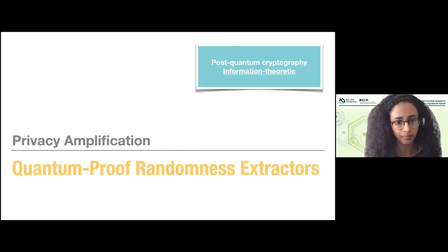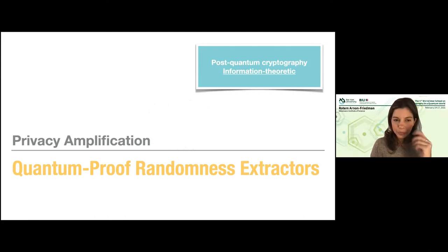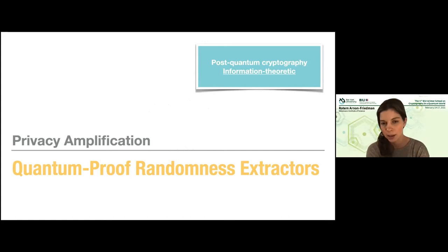What I want to do now is show that this trace distance between the real system and the ideal system is small. For this, I want to show how we construct the real system using this privacy amplification step, which is directly related to what we call quantum-proof randomness extractors. This is a step where I'm going to apply a classical function or classical protocol to the classical data — the raw data that Alice and Bob hold. But we still have the quantum adversary, so this is post-quantum information-theoretic cryptography with no computational assumption on the adversary.